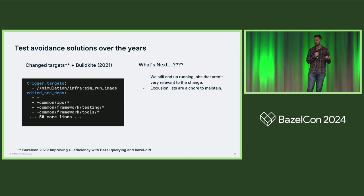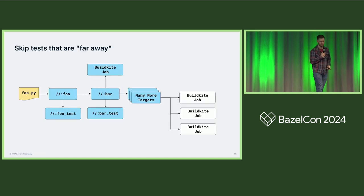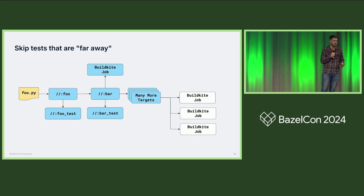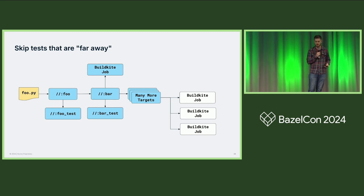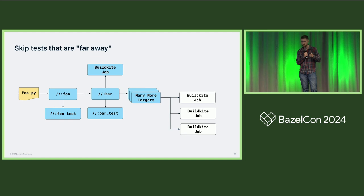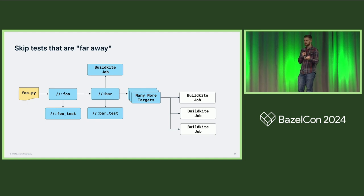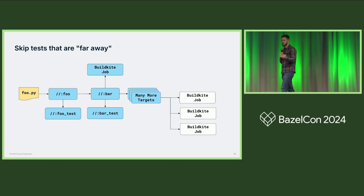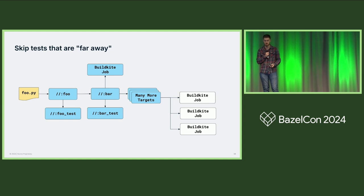So how do we figure out what's relevant? Our idea was to skip tests that we consider far away. In this example, we have a Python file, a bunch of targets, unit tests, and BuildKite jobs configured to trigger for it. We want to skip those BuildKite jobs that are further away, because we'd really like for unit tests and other tests closer to the file that was changed to catch errors — rather than spending a ton of money on expensive cloud simulation jobs.